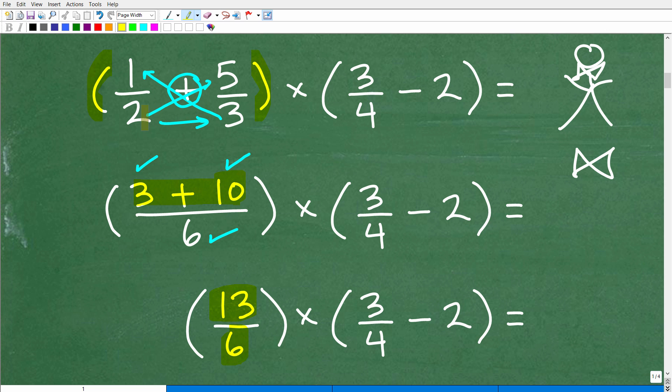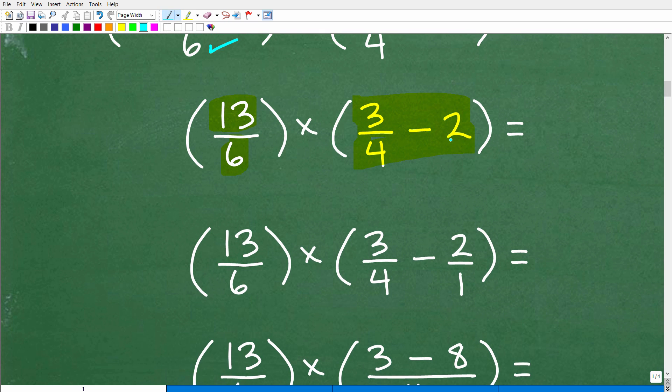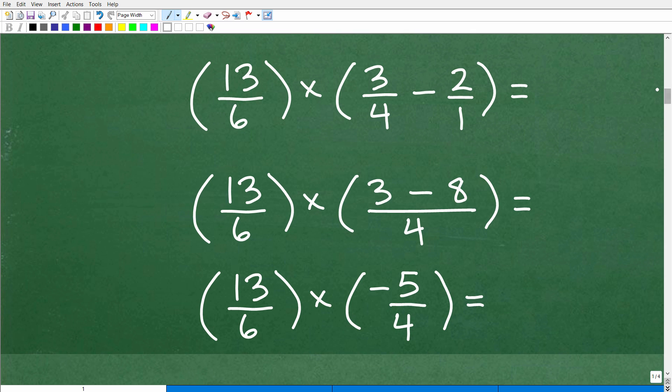Now we're going to deal with this problem right here, three-fourths minus two. Some of you might be saying, well, this is a whole number, it's not a fraction. Well, you can make any number look like a fraction by just putting it over one. So let's go ahead and deal with this. We already figured out this first addition problem, that's 13 over six. Now we have three-fourths minus two over one. Let's use that same technique, that bowtie technique.